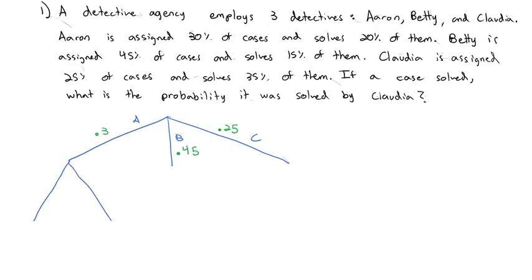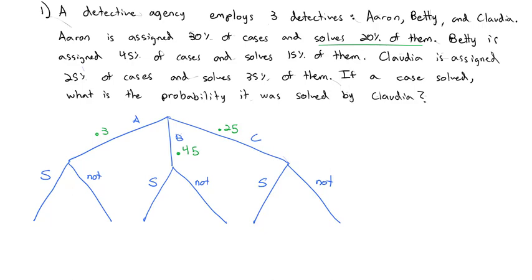Depending on who it's assigned to, one of two things happens each time: it will either be solved or not solved. If assigned to Aaron, he solves 20% — so solved is 0.2, and not solved is 0.8. Betty solves 15%, so solved is 0.15 and not solved is 0.85. Claudia solves 35%, so solved is 0.35 and not solved is 0.65.